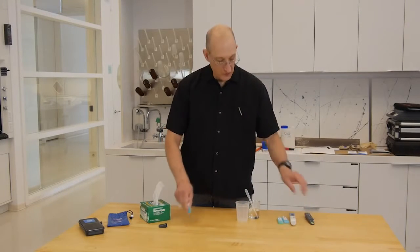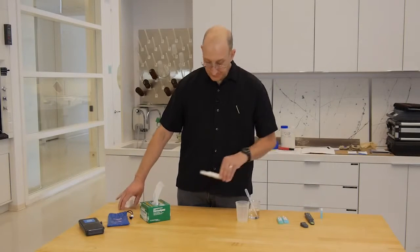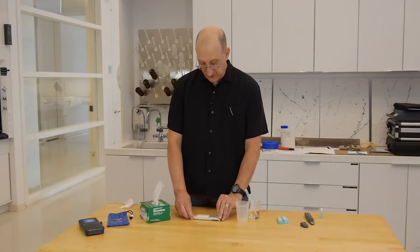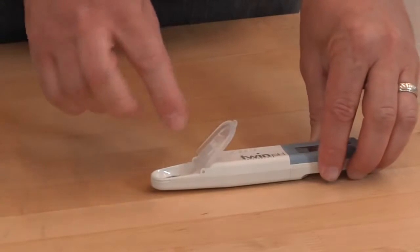For the pH meter, it's more or less the same process, except we're going to calibrate to two points. Again, we turn the meter on and we open the sample well.